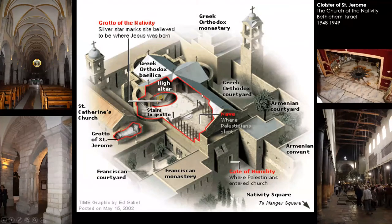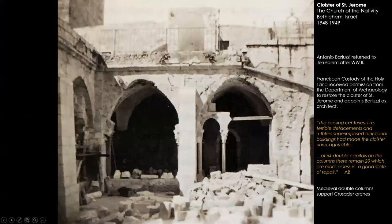When you emerge from making your way through this church, you find your way into this Franciscan courtyard — this is the area that Barluzzi worked on. When he arrived, he saw that it was in really tough shape. He said the passing centuries, fire, and terrible defacement all led to the cloister being nearly unrecognizable. There were 64 double column capitals, and out of those, about 20 remained. Here's one of the original carved capitals and a sketch of it still being able to be used. This is really a great example of a proper way to restore and be respectful between the old and the new — here you see the cloister as it wraps around the double columns. The surviving carved capitals contrast with Barluzzi's new modern capitals — the columns are smoother, giving the volume of the capitals but not trying to replicate what was originally there.